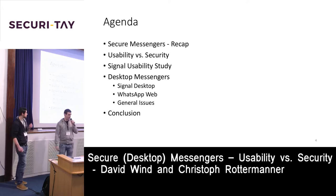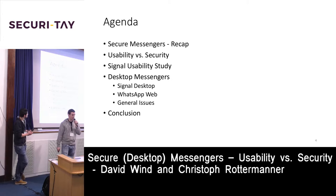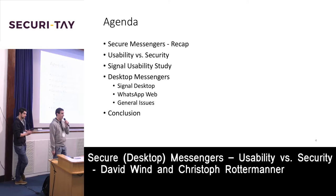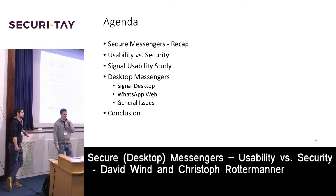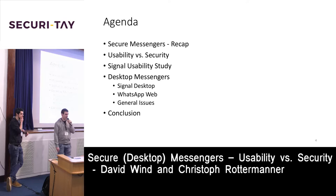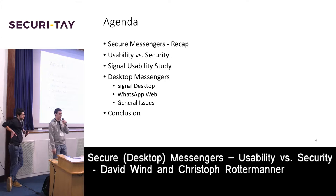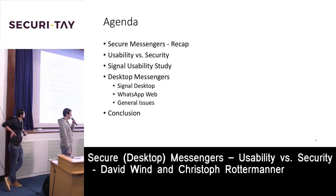What we are talking about today: first, a recap of what happened last year regarding secure messaging. Then we discuss the problem of usability versus security and provide an example where a provider made the messenger more usable but affected security. We also present results of a usability study for Signal, then cover desktop messengers — Signal and WhatsApp desktop applications — including the linking procedure, security issues, and a conclusion.